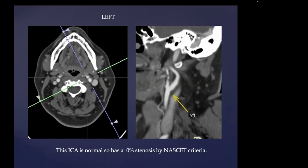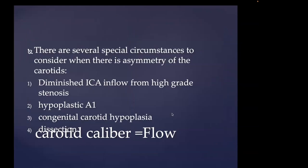The landmark NASCET study from 1991 addressed the beneficial effect of carotid endarterectomy in symptomatic patients with high-grade carotid stenosis — at that time defined as 40% stenosis. The NASCET paper was based on linear measurements from a carotid angiogram: the narrowest segment measured against a more distal parallel-walled segment. Here's a normal carotid on CTA with a normal carotid bulb — this would be 0% stenosis by NASCET criteria. Even though the bulb is wider than the distal vessel, you can't have a value less than zero.